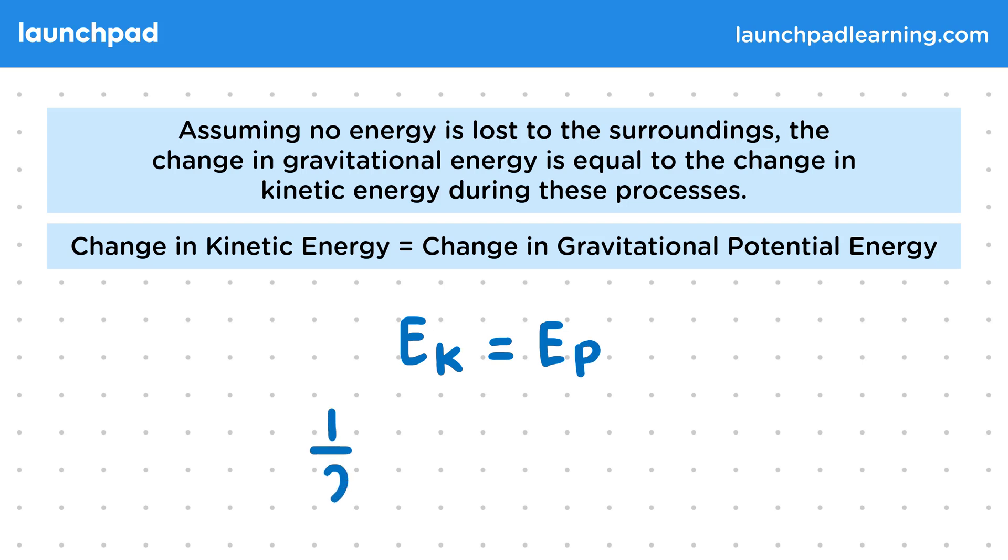The change in kinetic energy is given by half mv squared, and the change in gravitational potential energy is given by mgh. So we can say that half mv squared is equal to mgh.